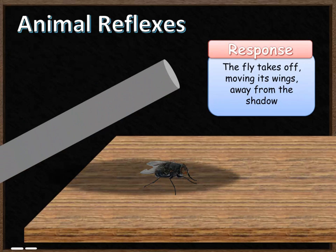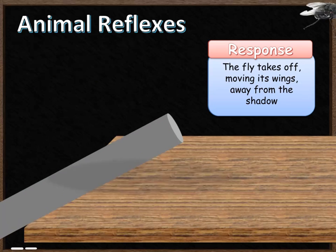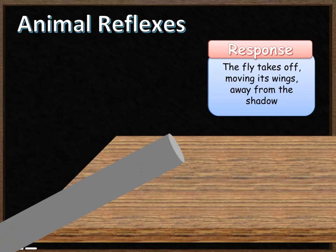When the fly detects those changes it has an involuntary reflex response. This is a response it's able to perform without thinking about it, so it's incredibly quick. The fly takes off, moving its wings, and moves away from the direction the shadow and the air are moving towards it. That's because the fly has this involuntary fast reflex response.